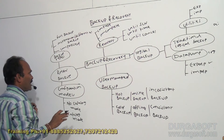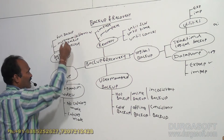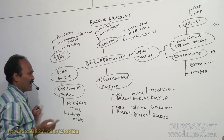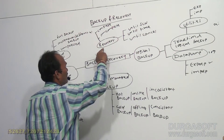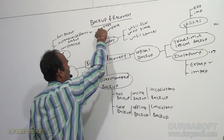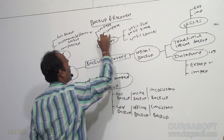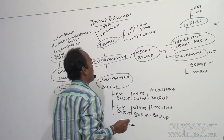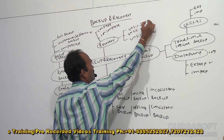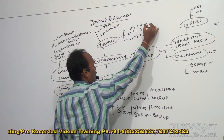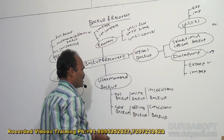RMAN backup can be configured in two varieties: no catalog mode and catalog mode. When coming to the restore and recovery process, the recovery can be either complete recovery or incomplete recovery. Incomplete recovery can be either up to a sequence change number, up to a point in time, or up to a cancellation.